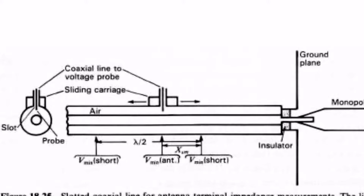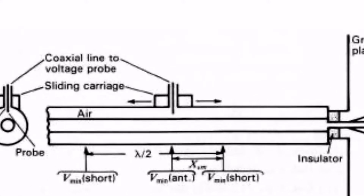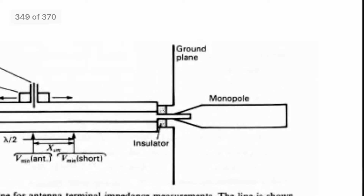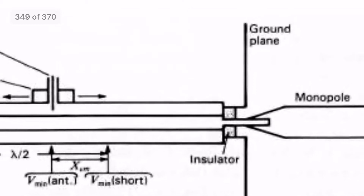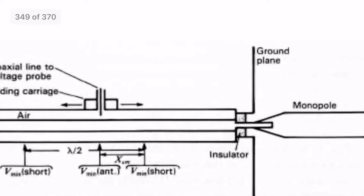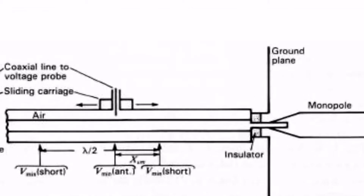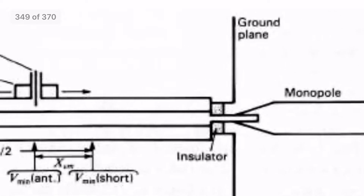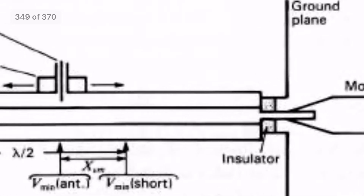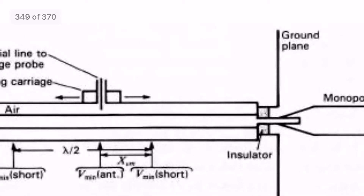Standing waves occur when we have a load of unknown impedance. There is an impedance mismatch — the characteristic impedance and the load impedance are different. Impedance mismatch causes reflections for maximum power transfer. Reflections and incident waves superimpose.